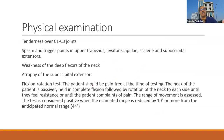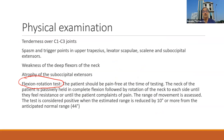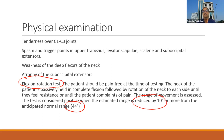On physical examination, we may find local tenderness and trigger points in the muscles, weakness of the neck muscles, and atrophy of muscles. An important specific test is the flexion rotation test. The patient is asked to touch the chin towards the neck, and then asked to rotate right and left. Normal range is about 45 degrees each side. If it is reduced by 10 degrees or more, that is significant. If positive, you should suspect cervicogenic headache.